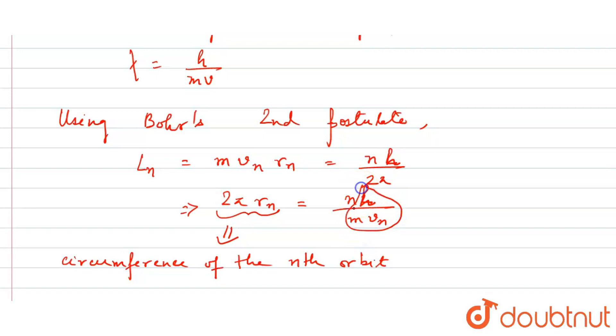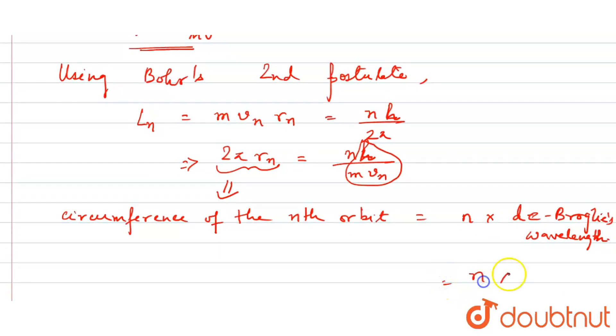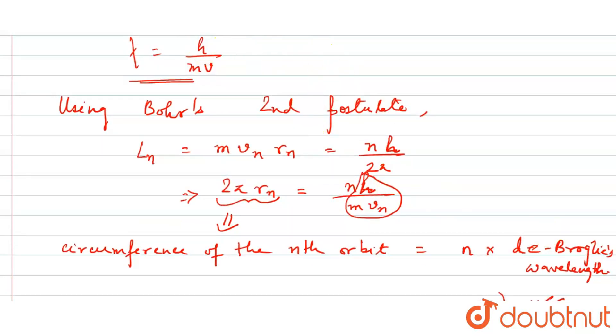So n mvn, sorry, h by mvn. This is what we can say. This is Debruglie's wavelength equals to n into Debruglie's wavelength. So what happened? n lambda. So this is what happened. This is what we can write. This is Planck's constant.